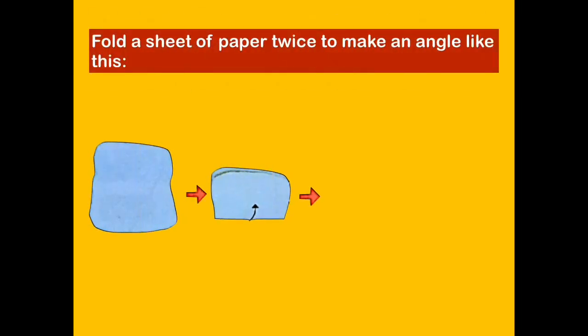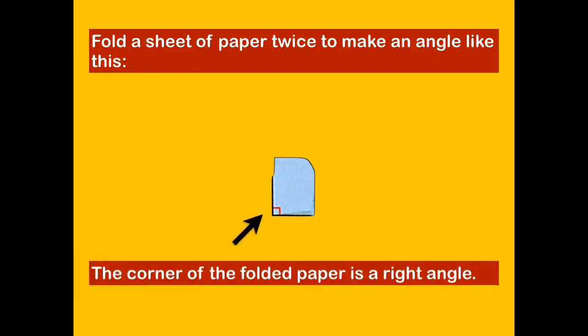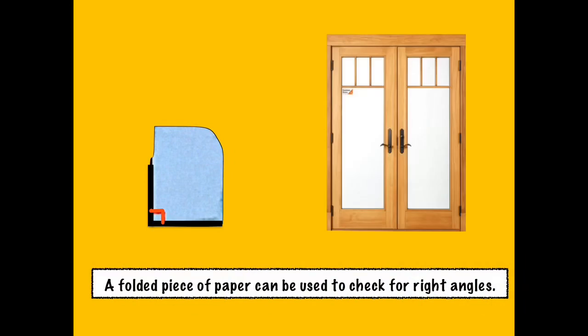Try to get a piece of paper. Pause this video and follow the instruction given. Fold the sheet of paper twice to make an angle like this. The corner of the folded paper is a right angle. A right angle has a square corner. This is the symbol for a right angle. Let's try to use the folded paper to check for a right angle in the given illustration. Keep in mind that the folded paper should be at the corner of the given illustration.